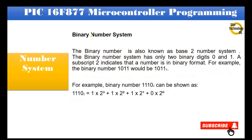Binary number system: The binary number is also known as the base 2 number system. The binary number system has only two binary digits: 0 and 1. A subscript 2 indicates that a number is in binary format. For example, the binary number 1011 would be written as 1011 base 2.